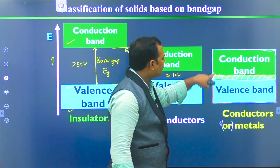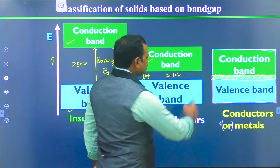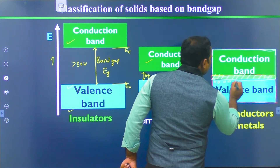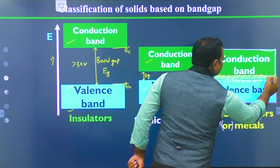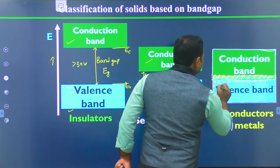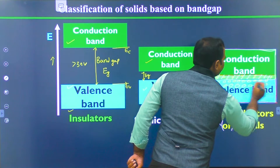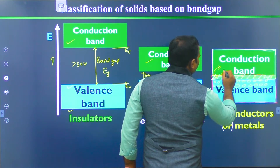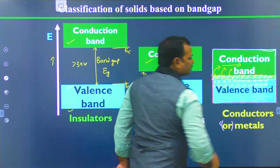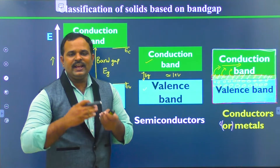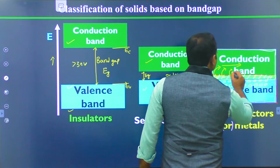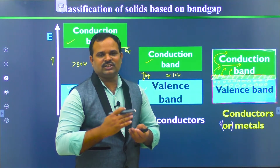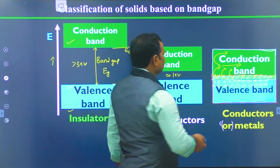Here the valence band and conduction band overlap each other. Because the valence band is already having electrons, since there is no bandgap in the case of conductors or metals, all these electrons will easily get to the conduction band and participate in the conduction process. We do not need to apply any external energy to send electrons into the conduction band. That is the reason why metals or conductors have high conductivity, of the order of 10⁻⁶ ohm-meter resistivity.